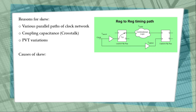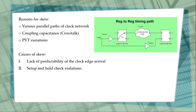The causes of clock skew result in: first, lack of predictability of the clock edge arrival — we are not sure when the clock is going to arrive. Second, setup and hold time violations, because the clock itself may be arriving late.